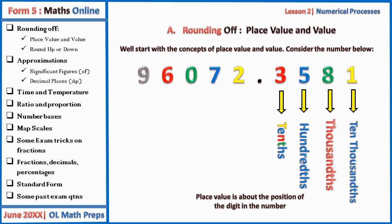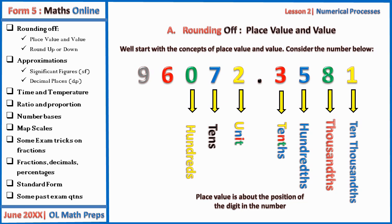Moving to the left-hand side of the decimal point, the digit immediately before the decimal point is a unit or whole number. Then seven occupies the position of tens, zero the position of hundreds, six the position of thousands, and nine the position of ten thousands.